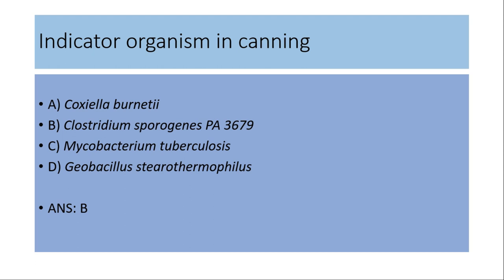Indicator organism in canning: (a) Coxiella burnetii, (b) Clostridium sporogenes PA3679, (c) Mycobacterium tuberculosis, (d) Geobacillus stearothermophilus. The answer is (b) Clostridium sporogenes PA3679. Geobacillus stearothermophilus is the indicator organism in the autoclave. Coxiella burnetii, which causes Q fever, is the target organism for UHT pasteurization in milk.